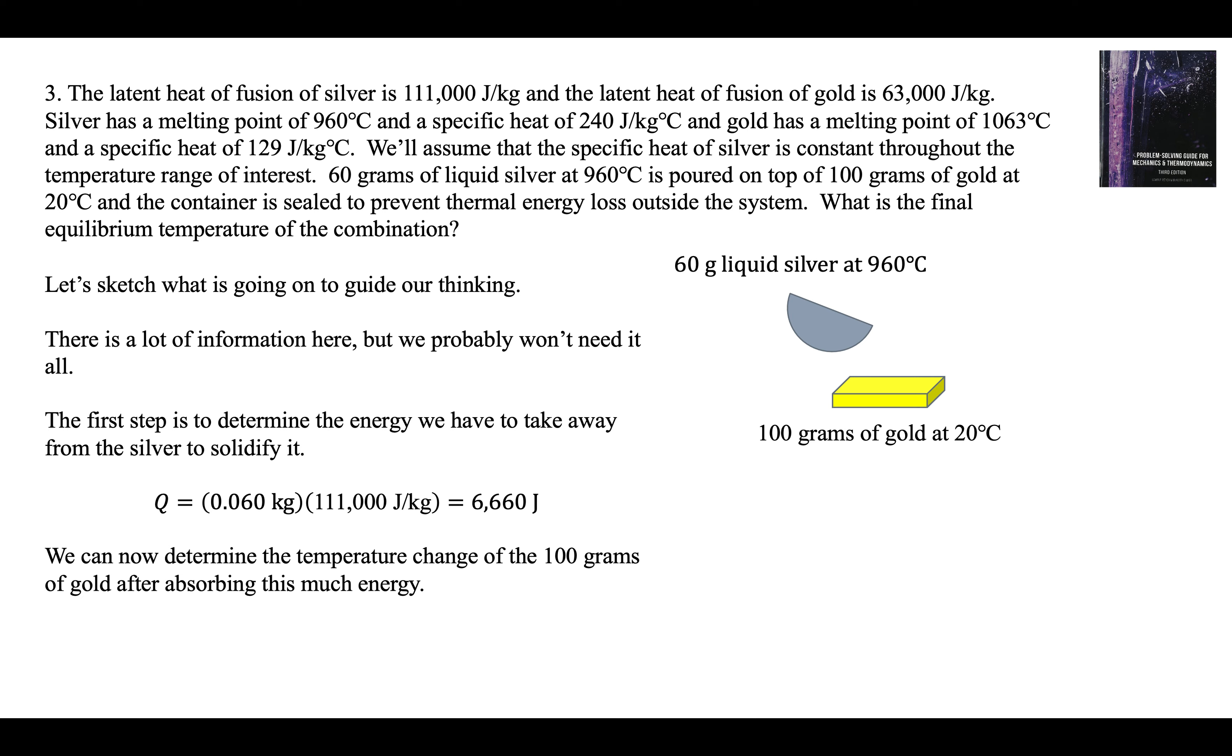So if you take away 6,660 joules from the liquid silver at 960, it will become solid silver at 960. Now we can determine how much the temperature of the gold has to change to do that. The gold's going to heat up. It's going to take away the energy from the silver. So we have 6,660 joules. This is the energy it costs to solidify the silver. We have 100 grams of gold, 0.1 kilograms.